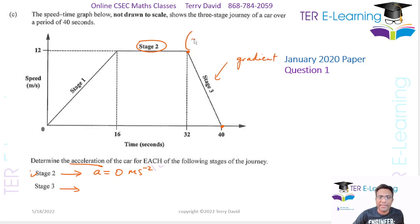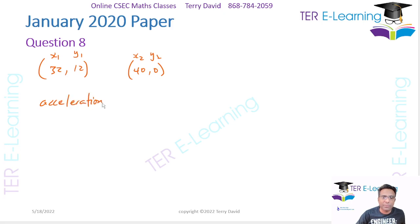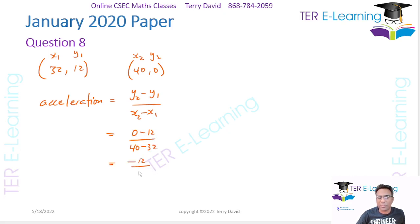For stage 3, we need to find the gradient. The two points are (32, 12) and (40, 0), where x1 = 32, y1 = 12, x2 = 40, y2 = 0. So the acceleration = (y2 − y1) / (x2 − x1) = (0 − 12) / (40 − 32) = −12/8. That gives minus 3 over 2 meters per second squared.